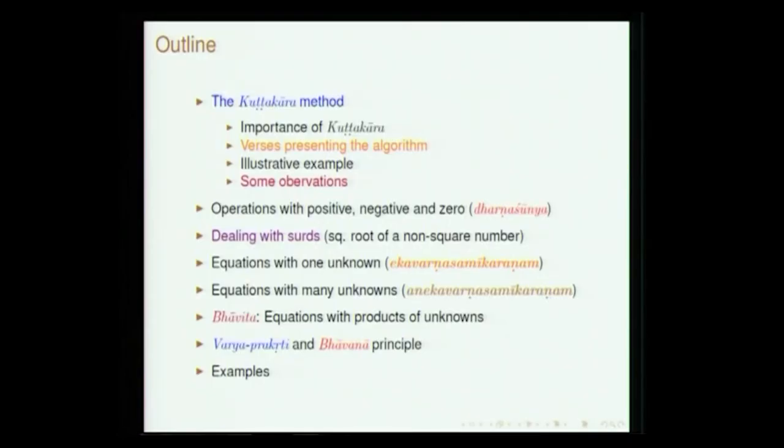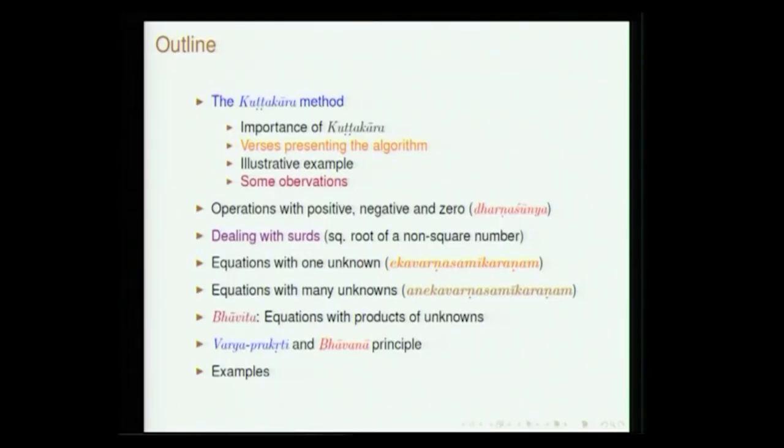Earlier we had two lectures on Brahmasphuta Siddhanta of Brahmagupta. Now is the third part which primarily deals with algebra. In Brahmagupta's Brahmasphuta Siddhanta, a voluminous work, the 18th chapter is called Kuttakaradhyaya. We saw Kuttaka also discussed by Aryabhata; Brahmagupta starts this chapter, which contains almost 100 plus verses, with the Kuttaka algorithm. We will briefly present that Kuttaka algorithm and then proceed with what is known as Dhanarna Sunya Sankalanam — Dhana means a positive quantity, Rina means a negative quantity, Sunya is zero — operations with positive, negative, and zero, discussed in great detail by Brahmagupta.